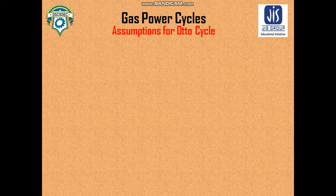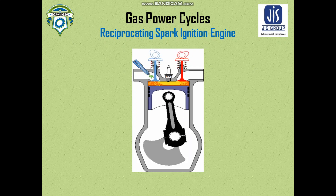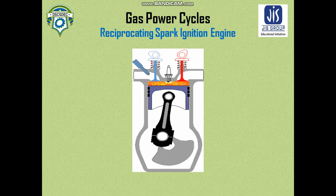Let us start discussing the Otto cycle. The primary assumption is that air is the working fluid and behaves as an ideal gas. We shall then move on to the characteristics of the various processes involved in a reciprocating spark ignition (SI) engine.